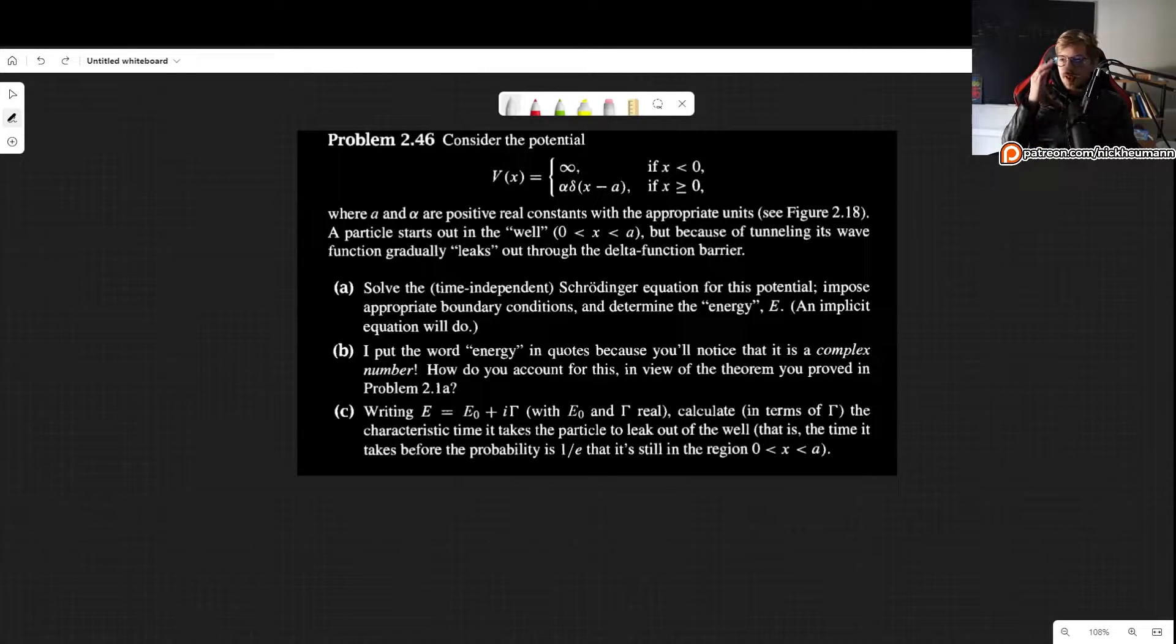What we have to do is solve the time independent Schrödinger equation for this potential, impose appropriate boundary conditions, and determine the energy E. We can just get to an implicit equation, we don't really have to worry about solving exactly.